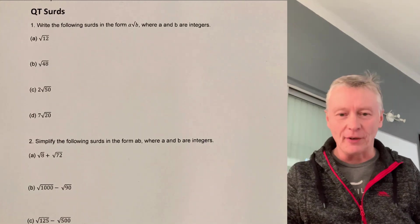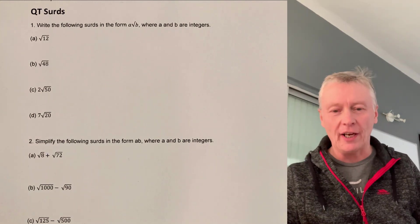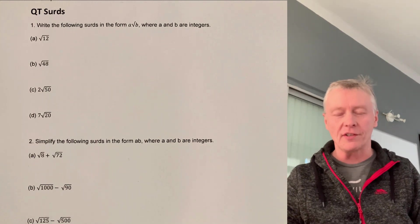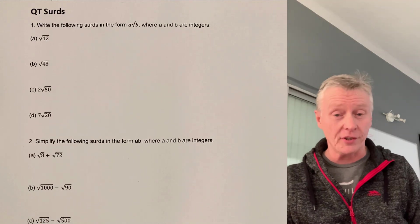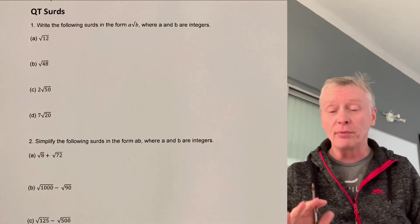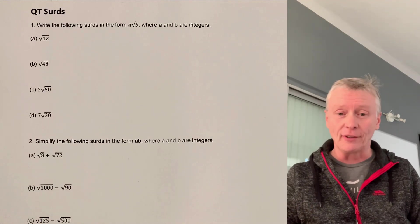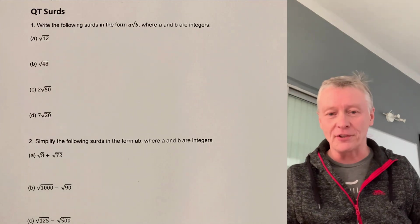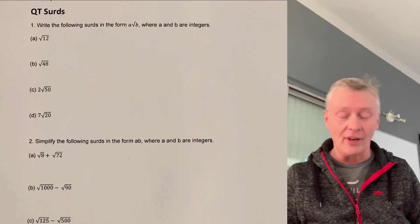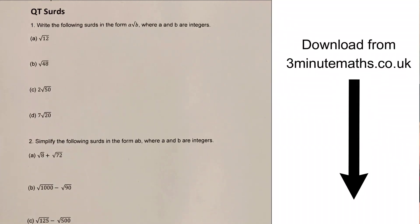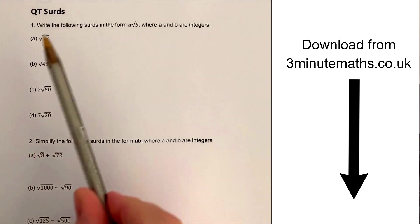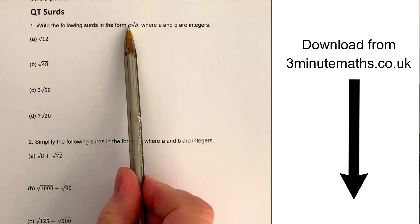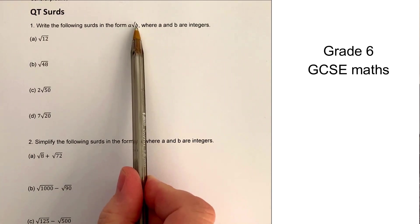In this video we're going to be looking at working with surds. This is aimed at roughly grade 7 GCSE. Please do download the worksheet from the website and have a go at each of the questions for yourself. On to question number 1, which is fairly straightforward: write the following surds in the form A root B.